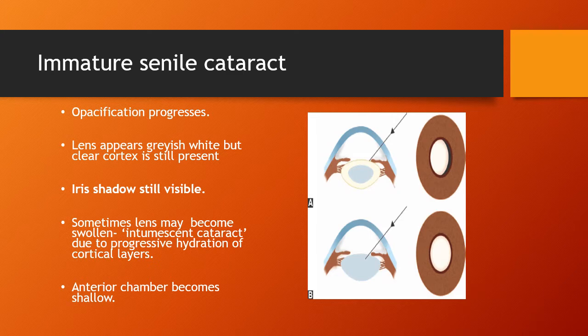Coming to the stage of immature senile cataract — the opacification progresses further. Lens appears grayish white but clear cortex is still present in between, due to which there is presence of iris shadow. In oblique illumination, when the lens is visualized with an oblique beam, a crescentic shadow of the pupillary margin of iris is formed on the grayish opacity of the lens, as long as there is clear cortex present between the opacity and the pupillary margin. When lens is completely transparent or opaque, no iris shadow is formed. Hence, the presence of iris shadow is a sign of immature cataract. Sometimes the lens may become swollen, known as intumescent cataract, due to progressive hydration of the cortical layers, and the anterior chamber becomes shallow in these cases.